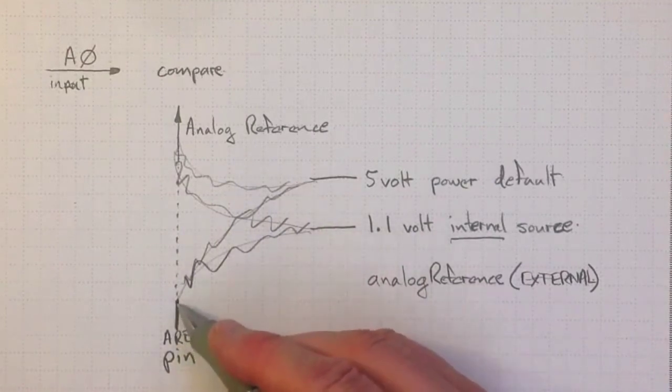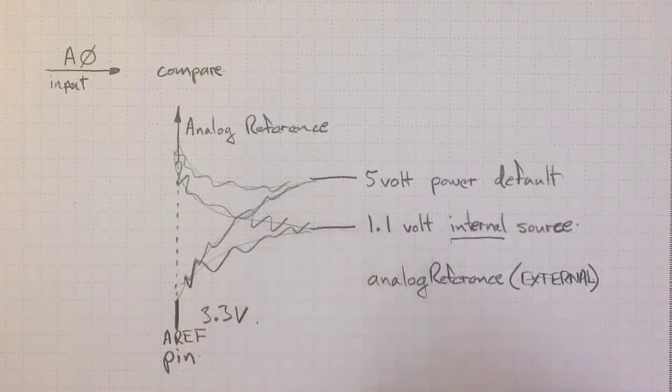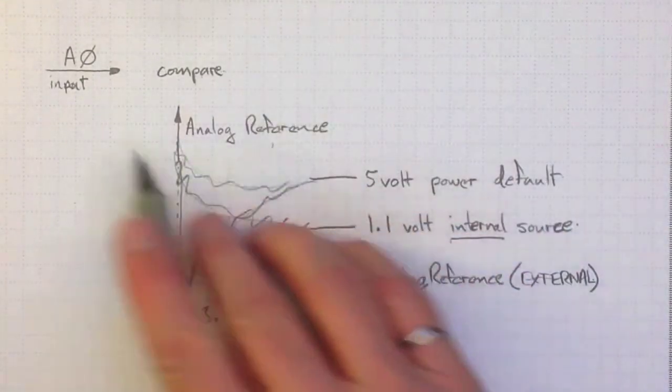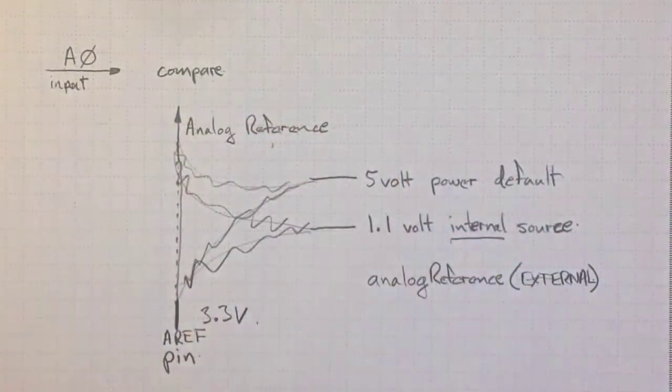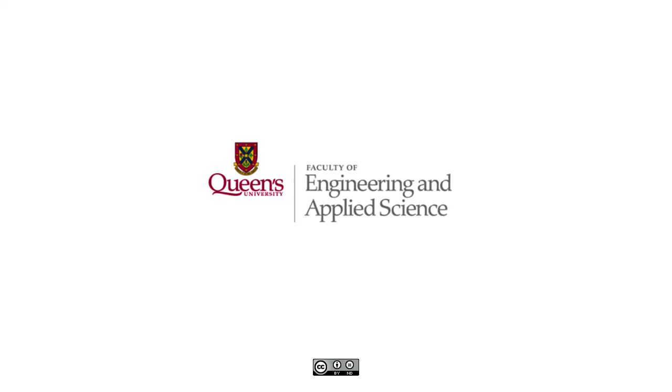So what we'll typically be doing is connecting 3.3 volts to the AREF pin, and that will pass through to the analog reference and be used to compare to the inputs.